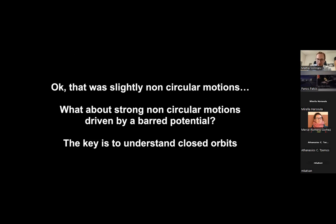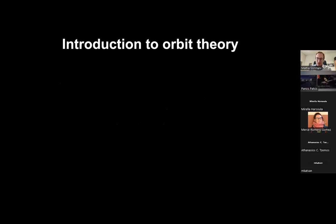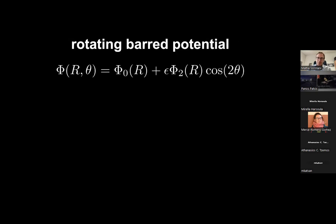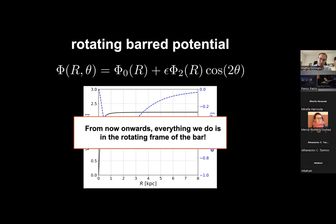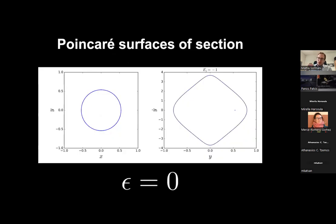For strong non-circular motions driven by the bar, the key is to understand closed orbits. I take the simplest possible barred potential: an axisymmetric part Φ₀ plus ε — the bar strength — times a quadrupole term proportional to cos(2θ). Everything from now on is in the frame rotating with the bar. The best tool to understand closed orbits is the Poincaré surface of section.